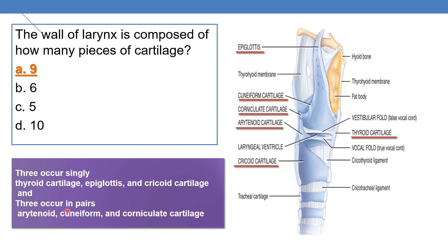And three occur in pairs: 2 arytenoid cartilages, 2 cuneiform cartilages, and 2 corniculate cartilages. So total 6 plus 3 equals 9. There are 9 pieces of cartilage in the wall of the larynx.